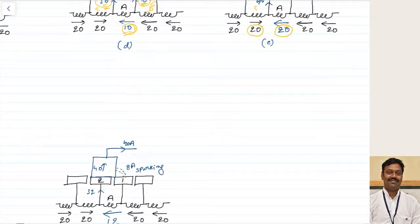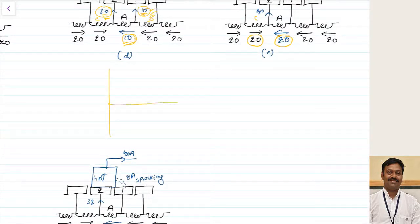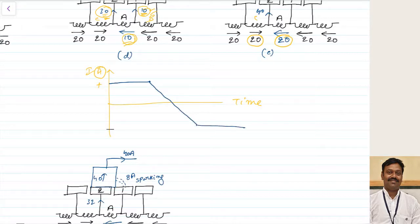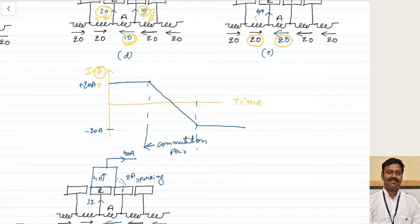Let us represent this in the form of a diagram. The x-axis is time and the y-axis is the current passing through a coil. For commutator segment A, we can see the current is changing from plus 20 amperes initially. When the commutation process starts, it goes on changing, reaches zero, and reaches minus 20 amperes — varying from plus 20 to minus 20 amperes. The time taken to change from plus 20 to minus 20 amperes is called the commutation period. This is the ideal case.